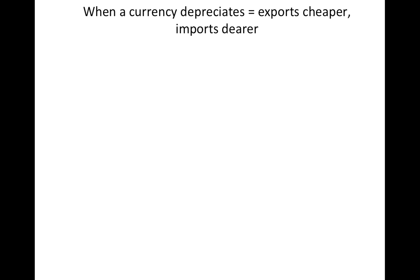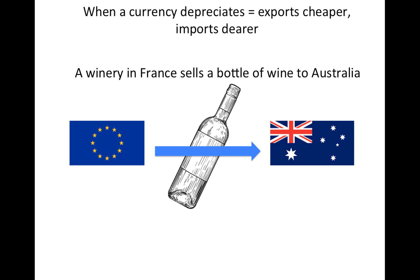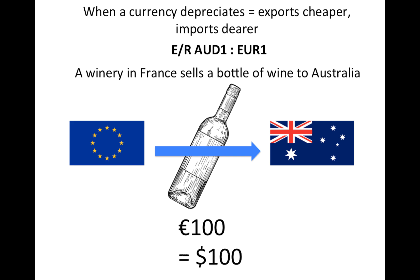We're going to see this with an example. Suppose that we have two countries, the European Union and Australia, and there's a winery in France that is selling a bottle of wine to Australia. This bottle of wine is priced at 100 euros. If the exchange rate is equal to one Australian dollar per euro, this means that Australian customers are going to have to pay exactly 100 dollars to get this bottle of wine from France.